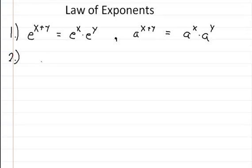So, now the second one. If you have e to the x minus y, you can rewrite that as e to the x divided by e to the y.